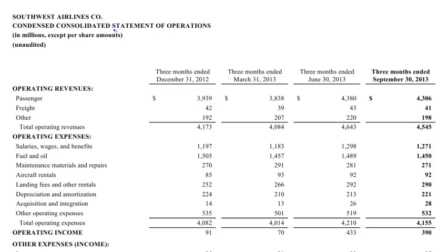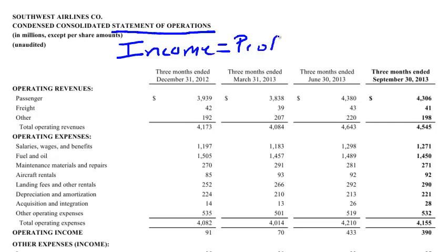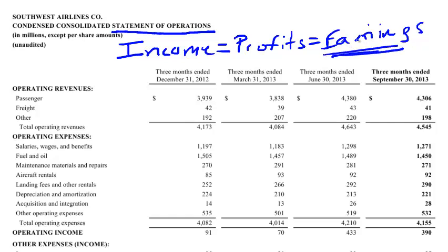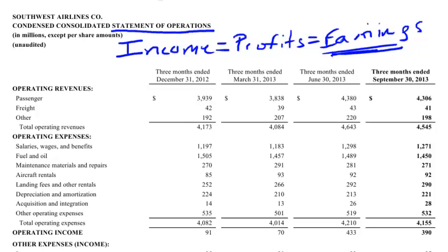One thing that may mislead you is that income statements generally don't have the title 'income statement' — they're called 'statement of operations.' If you see a link, it'll often say 'income statement,' but when you pull it up it won't have that title. Also, throughout this document you'll see the term 'income,' but when you hear income, profits, or earnings, they generally mean the same thing. Earnings tends to refer to the net bottom line, but these three terms are typically used interchangeably.